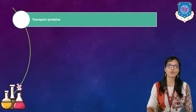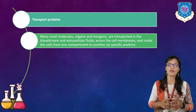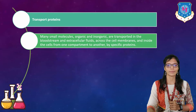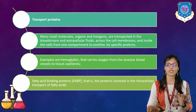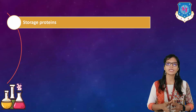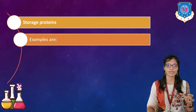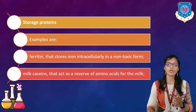Transport proteins: many small molecules — organic and inorganic — are transported in the bloodstream, extracellular fluids, across cell membranes, and inside cells from one compartment to another by specific proteins called transport proteins. An example is hemoglobin, which carries oxygen. Fatty acid binding proteins are involved in intracellular transport of fatty acids. Storage proteins store different things — for example, ferritin stores iron intracellularly in non-toxic form, and milk caseins act as a reserve of amino acids.